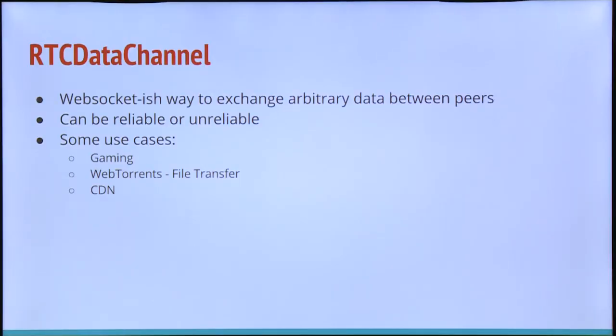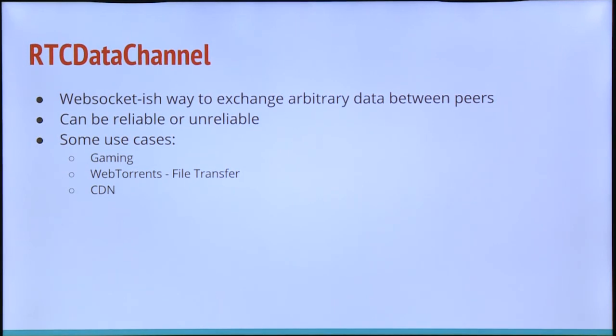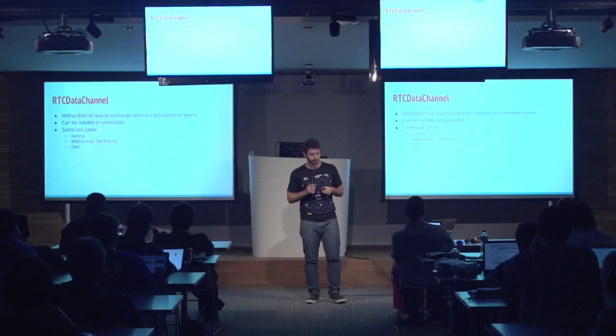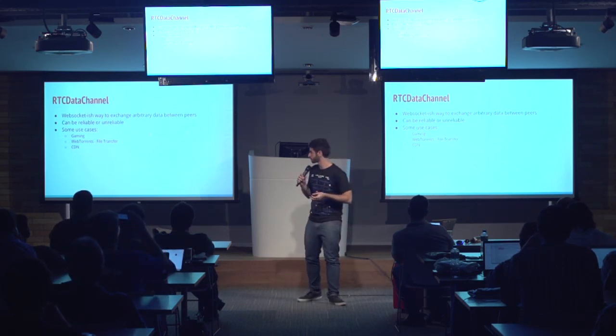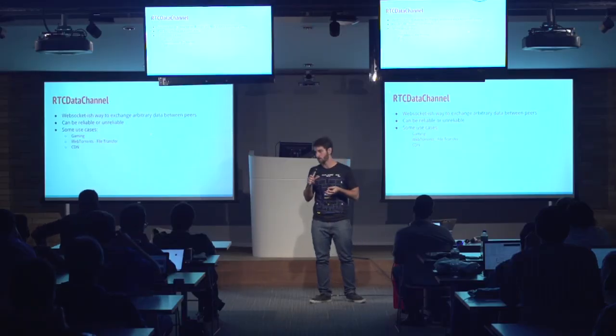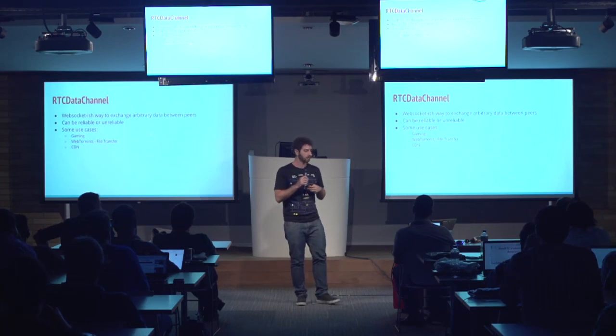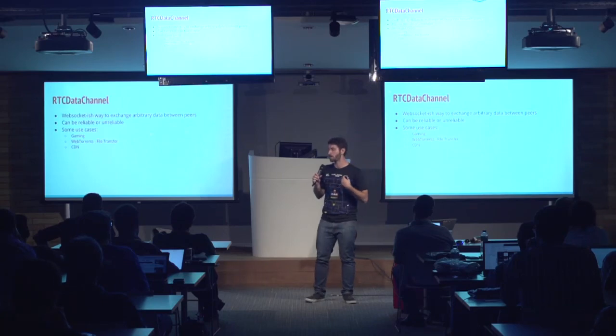The RTCDataChannel API enables sending and receiving data, and works very similarly to WebSockets. The question is: why do we need another communication channel when we already have WebSockets and AJAX? The answer is because this is peer-to-peer, so there are more benefits — lower latency, more security, and more privacy, because there is no server in the middle reading your messages.